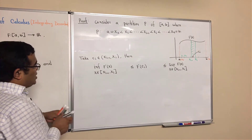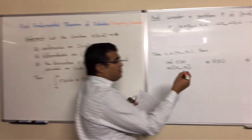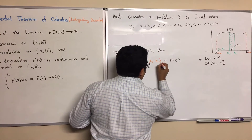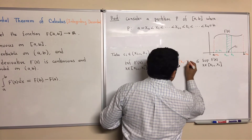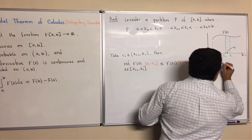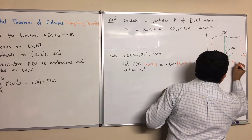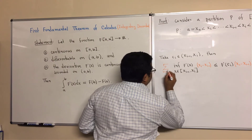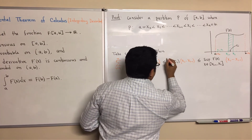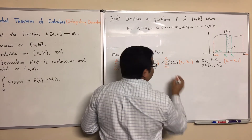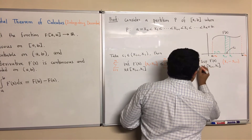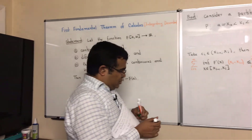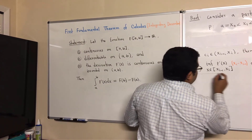Now what we will do is multiply the whole inequality by (xi minus x(i-1)), and then take the summation from i equals 1 to n on all three parts. By the definition of the lower Riemann sum, the left side is the lower Riemann sum of F prime for partition P.